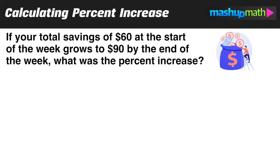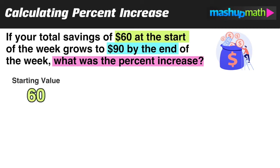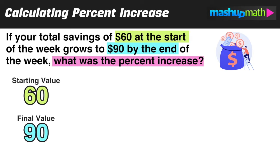In this first example, if your total savings of $60 at the start of the week grows to $90 by the end of the week, what was the percent increase? The first step should be to identify the key information: we had $60 at the start of the week, $90 by the end, and we want to find the percent increase. Before using the three steps, we identify two values: the starting value and the final value.